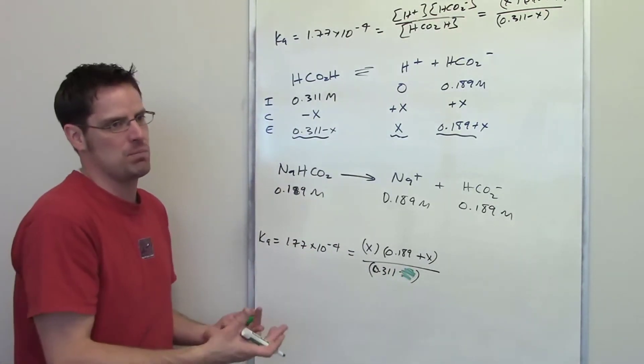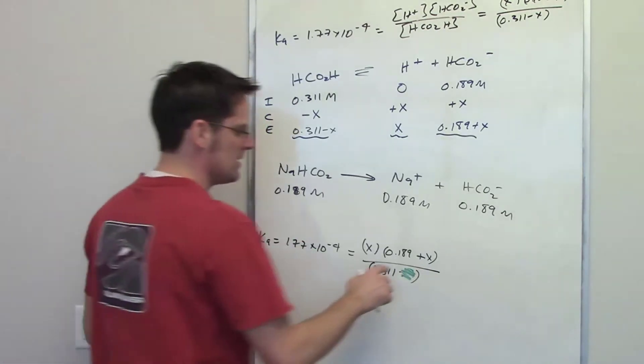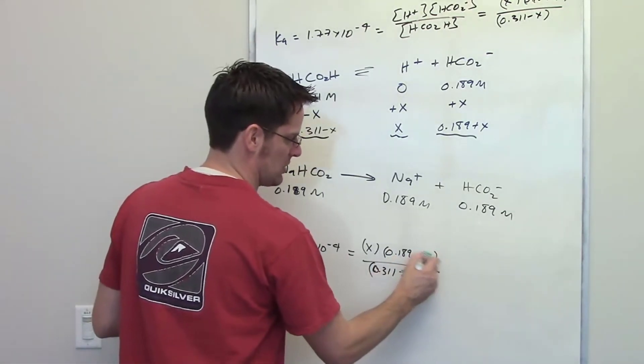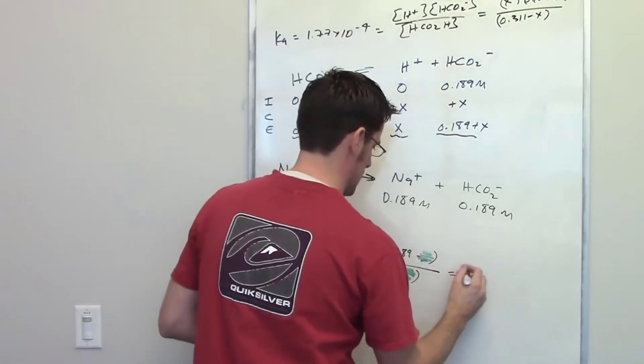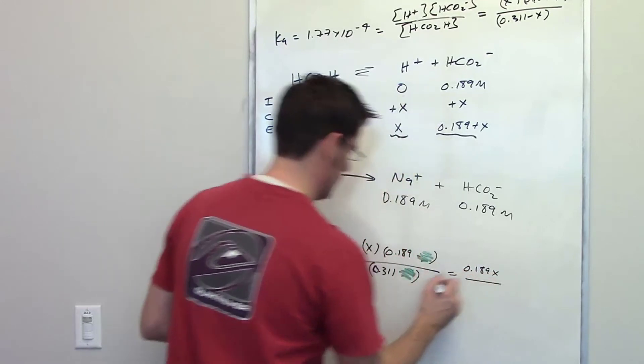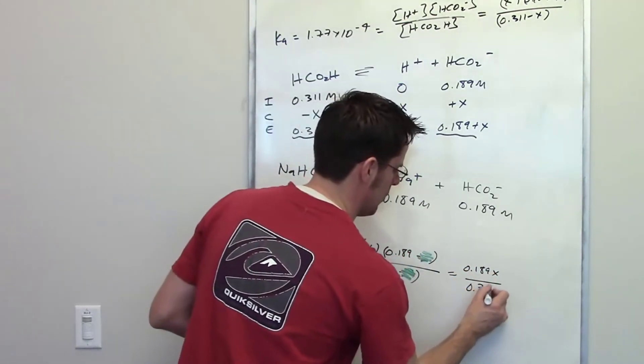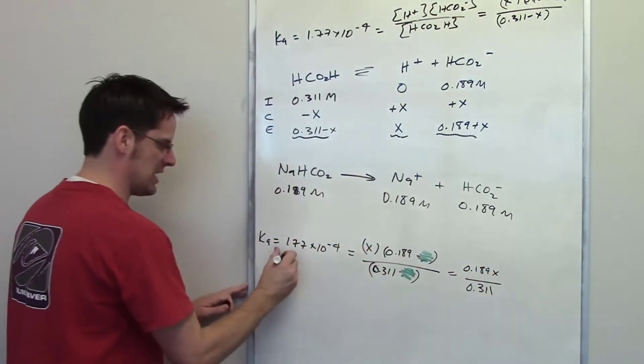Same thing with the 0.189. You can just throw out this X term. So that simplifies things a little bit, gives us 0.189X divided by 0.311 being equal to this Ka value.